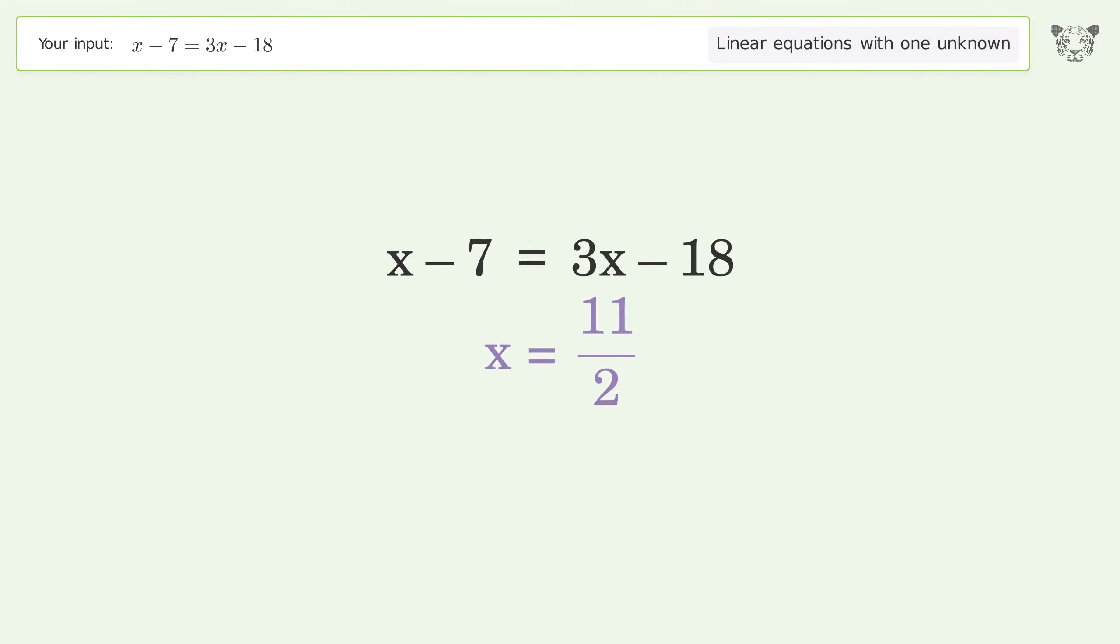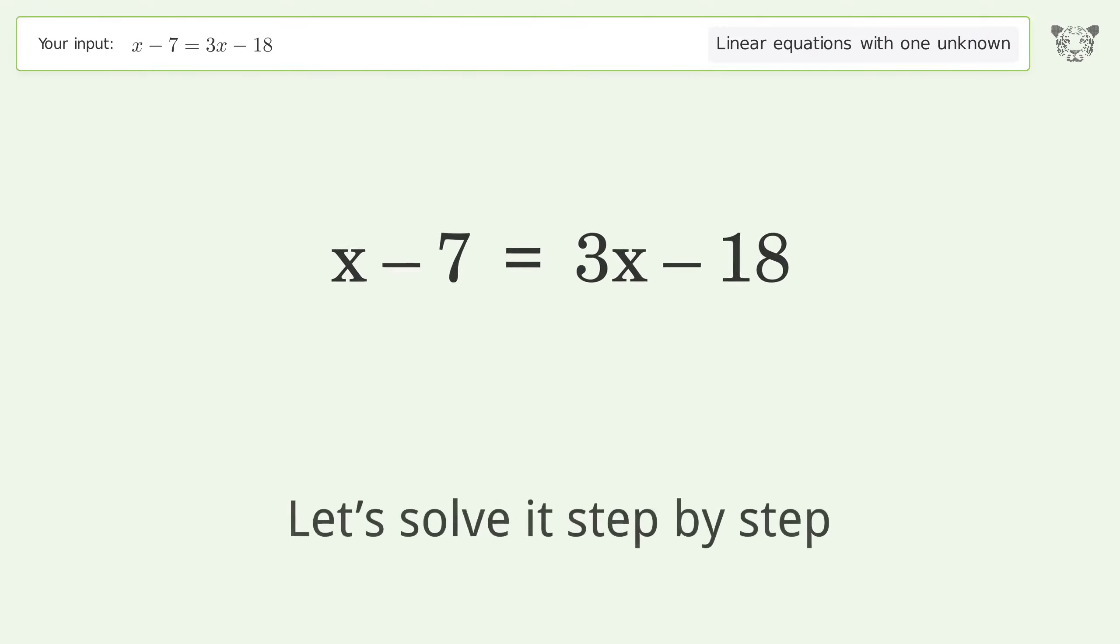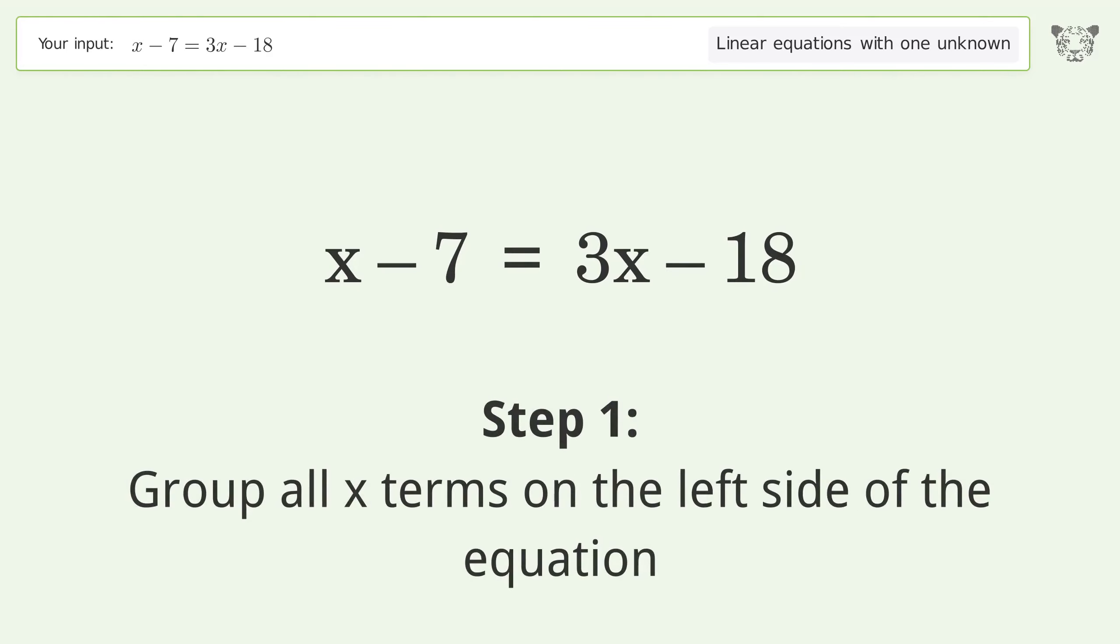You asked Tiger to solve. This deals with linear equations with one unknown. The final result is x equals 11 over 2.